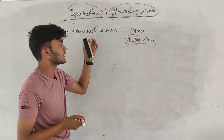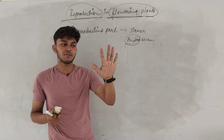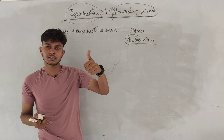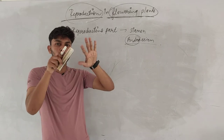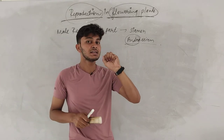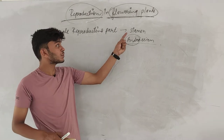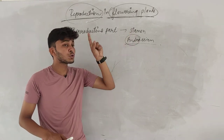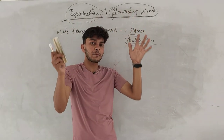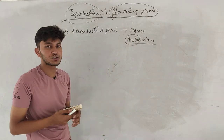Androecium and stamen can be different terms. Just like we have five fingers — if you talk about one, this is the thumb, but collectively they are all known as fingers. Same way, if we talk about one thing, one thing is a stamen. If we are talking collectively, all the stamens are collectively known as the androecium.